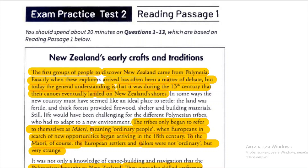You need to find a reference to the 13th century, and underline any words in the first two sentences which are used instead of 'humans.' Look for a phrase which means something similar or opposite to 'widely taught.' The first paragraph says: 'The first groups of people to discover New Zealand came from Polynesia... the general understanding is that it was during the 13th century that their canoes eventually landed on New Zealand's shores.' The common belief — 'widely taught' — is that the first humans got to New Zealand in the 13th century. This is TRUE.